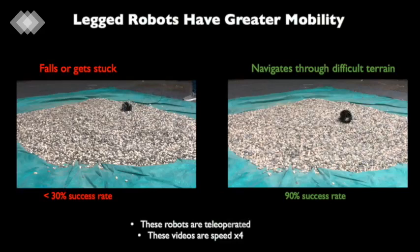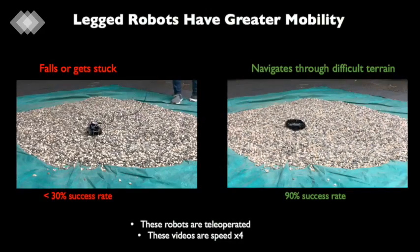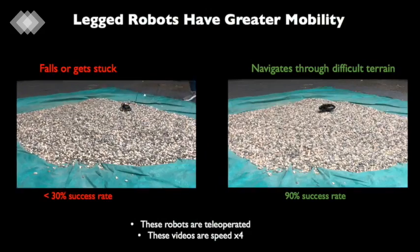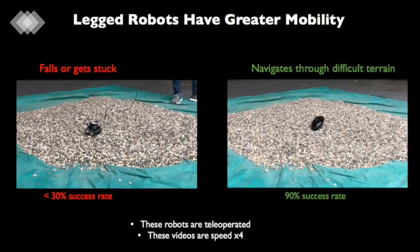Here, we show a wheeled platform struggling to traverse difficult terrain. Legged systems, on the other hand, can provide improved scaling of obstacles and increased mobility in complex environments.